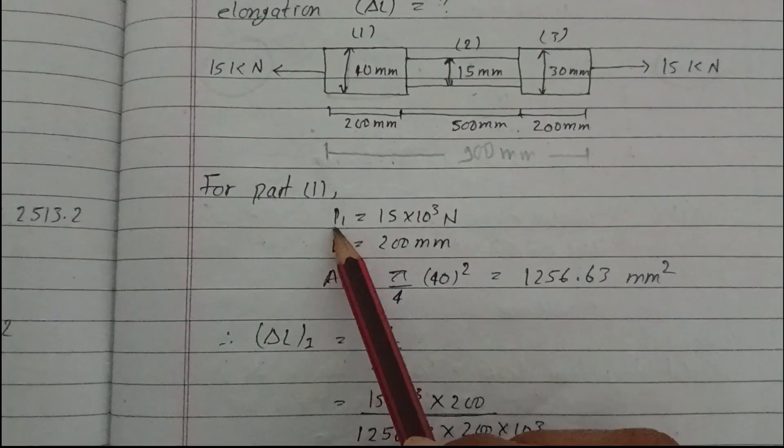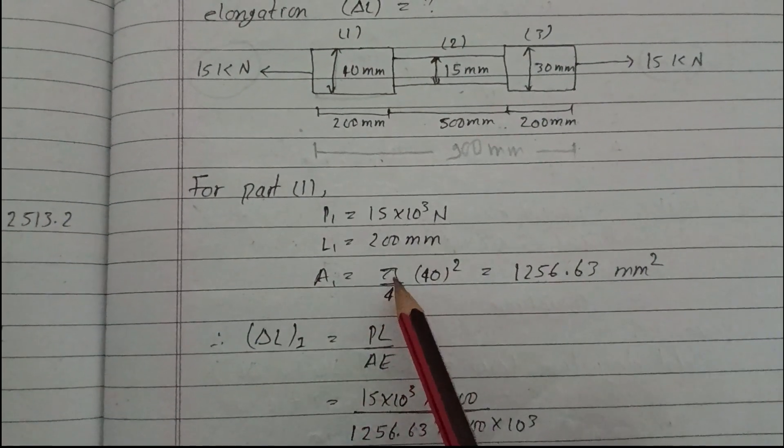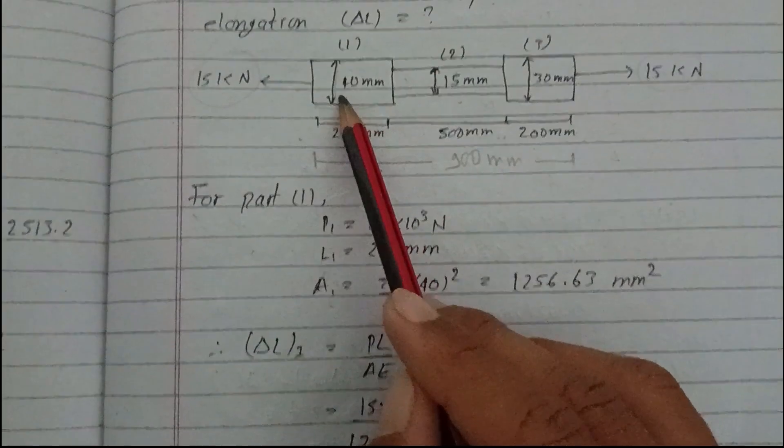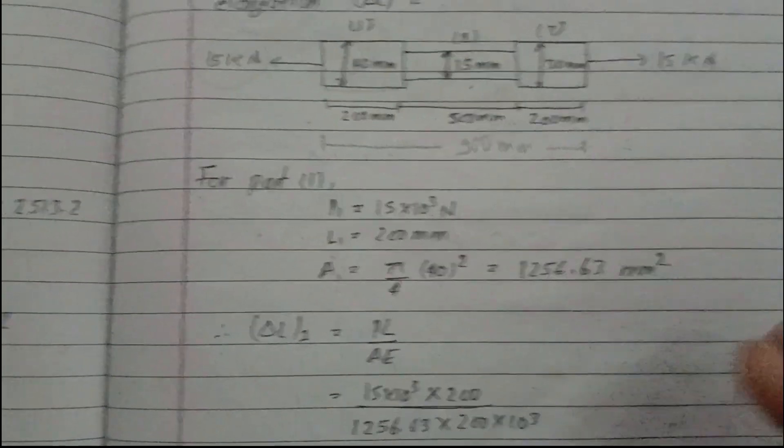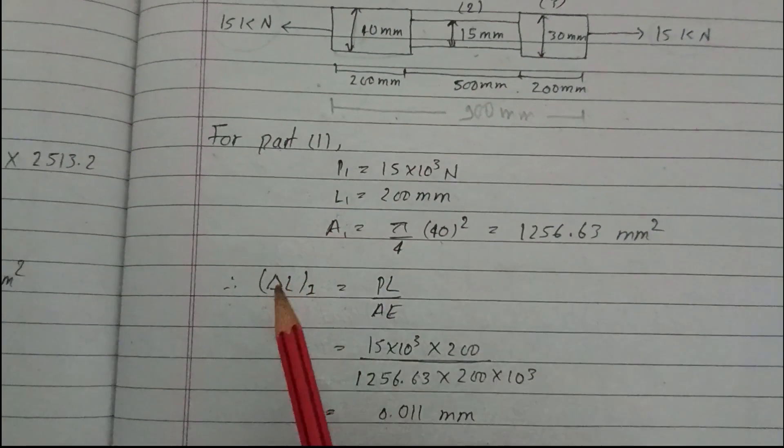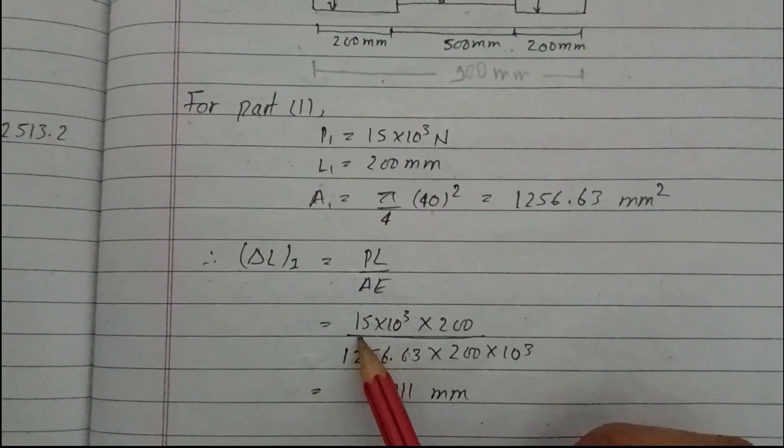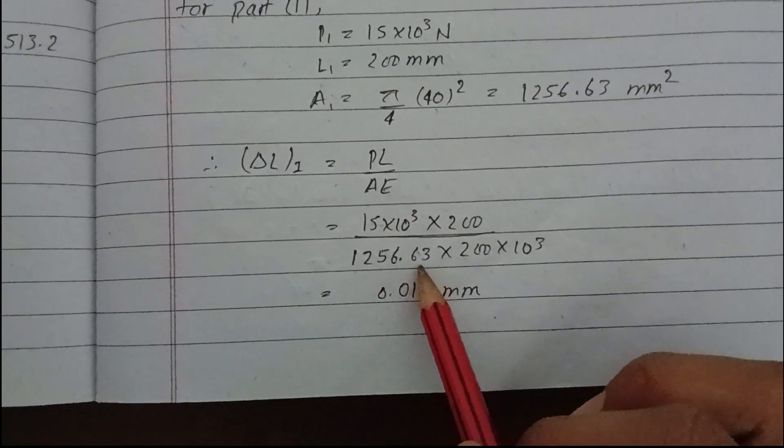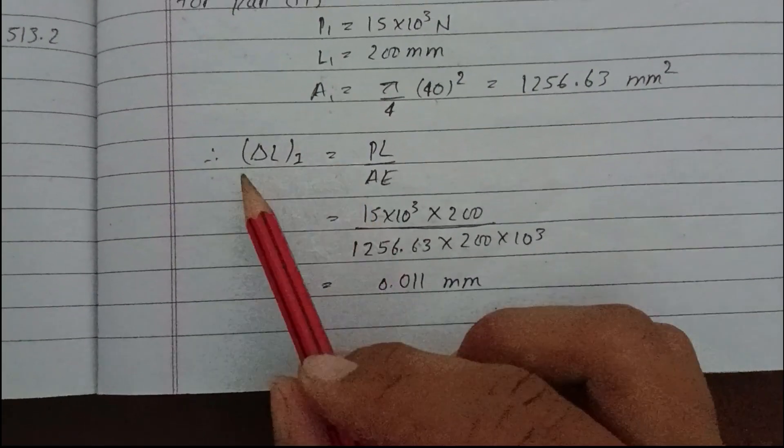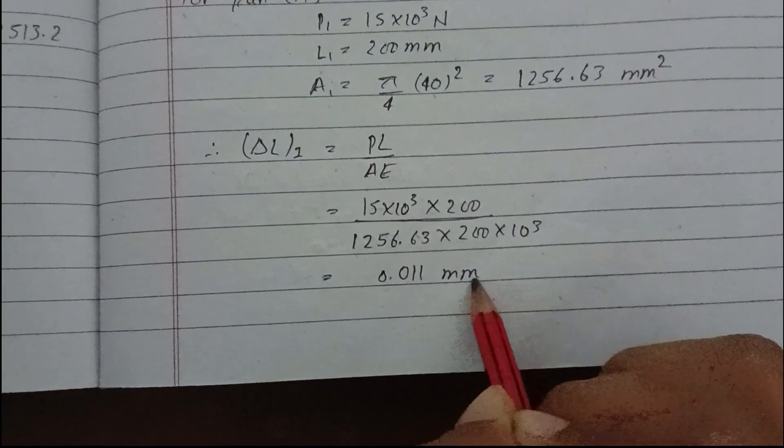For part one: P1 equals 15×10³ N, L1 equals 200 mm, and area A1 equals π/4 × D² where D equals 40 mm, giving A1 equals 1256.63 mm². The elongation ΔL1 equals PL/AE equals (15×10³ × 200)/(1256.63 × 200×10³), giving elongation of 0.011 mm.